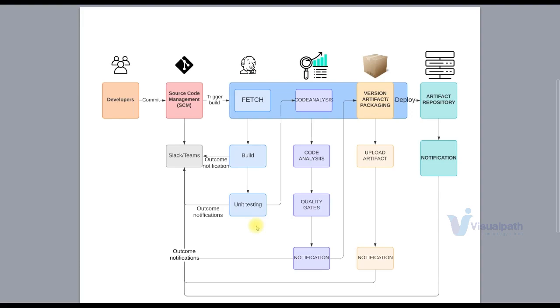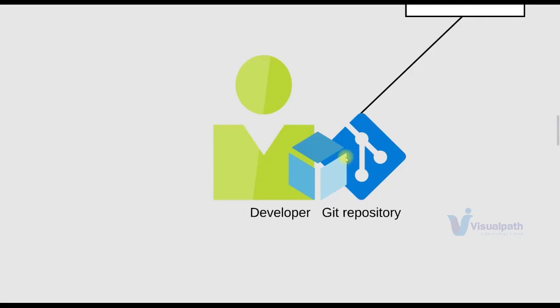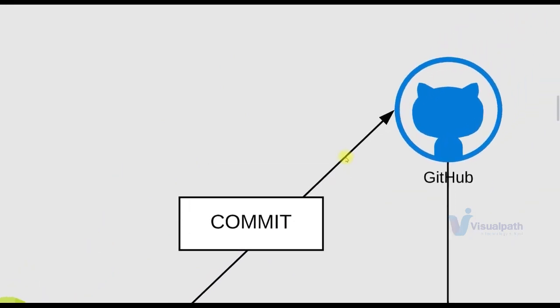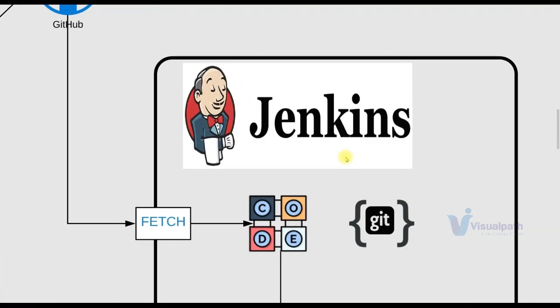Now let's see the architectural design using all the tools. A developer will make a code change using their IDE, like Visual Studio or IntelliJ, and that IDE will be connected to a Git repository. The developer makes a code change and commits. This commit will be synced with a remote repository — we'll be using GitHub. As soon as GitHub receives a commit, our continuous integration server, Jenkins, will detect that and fetch the changes, the latest code. So it will have an integration with GitHub.